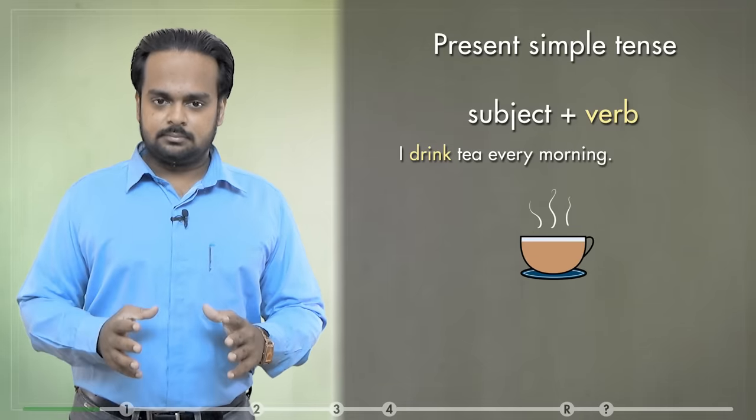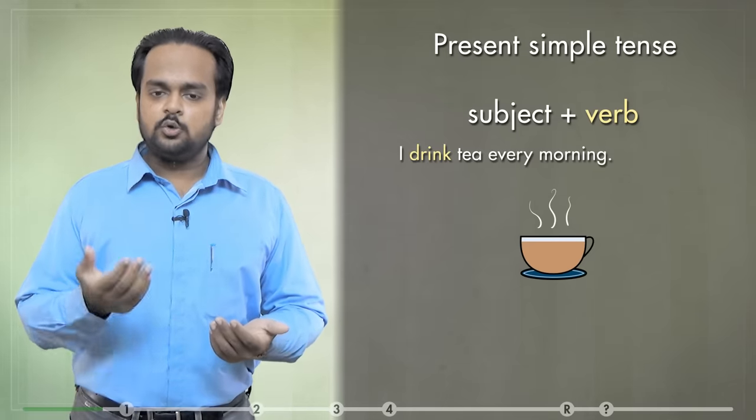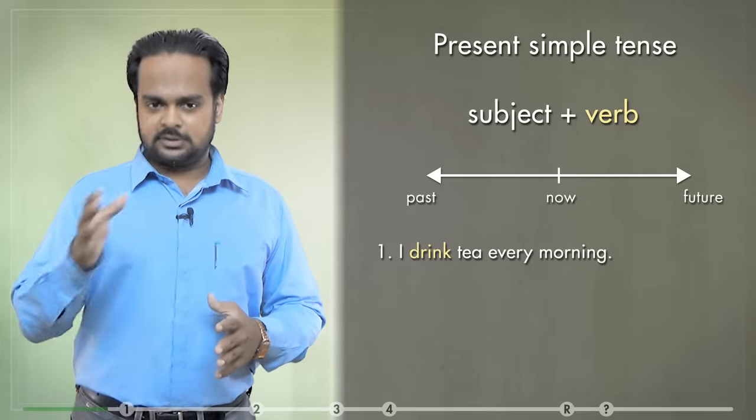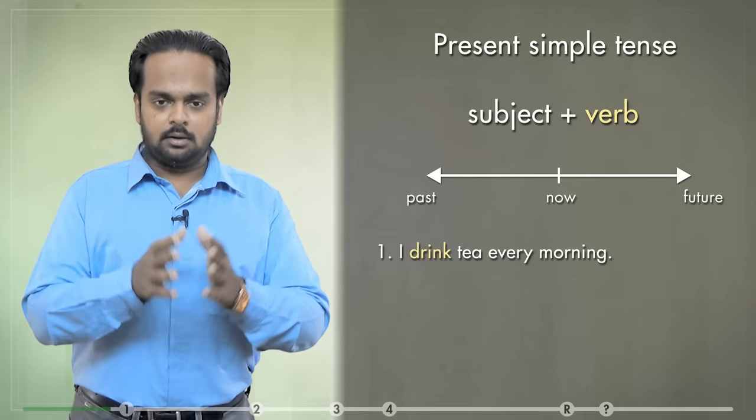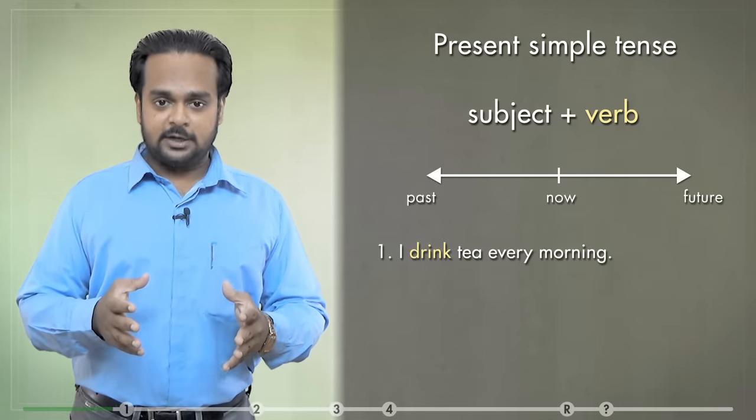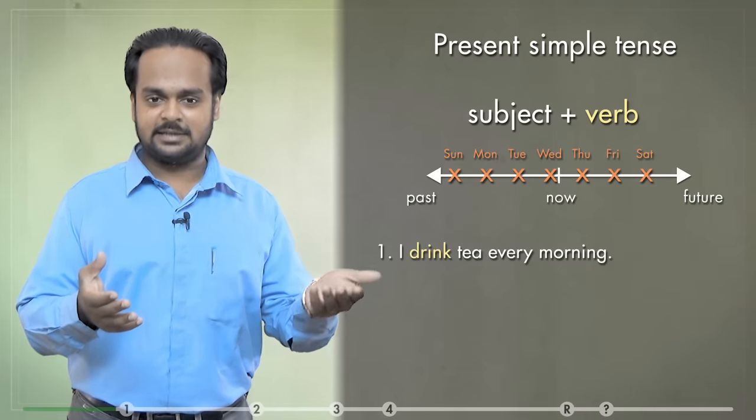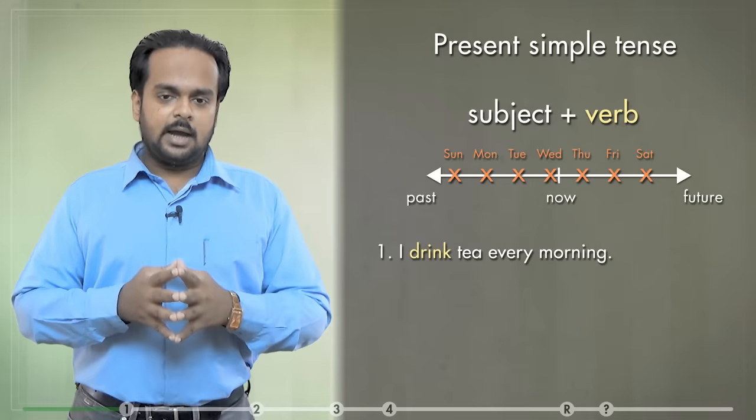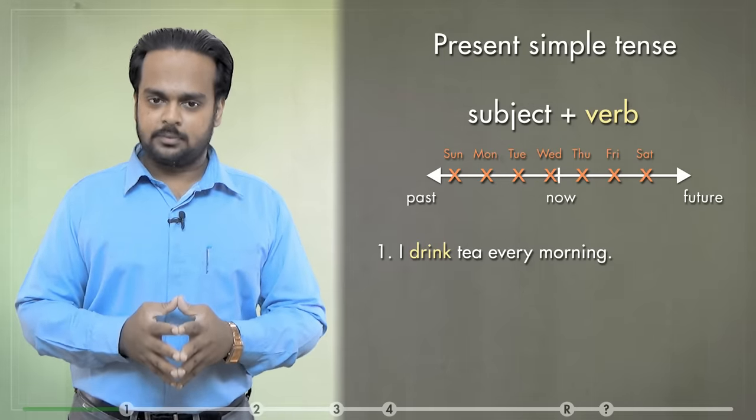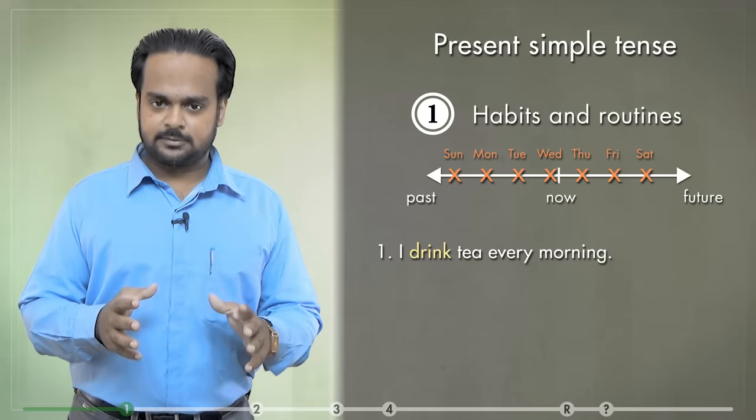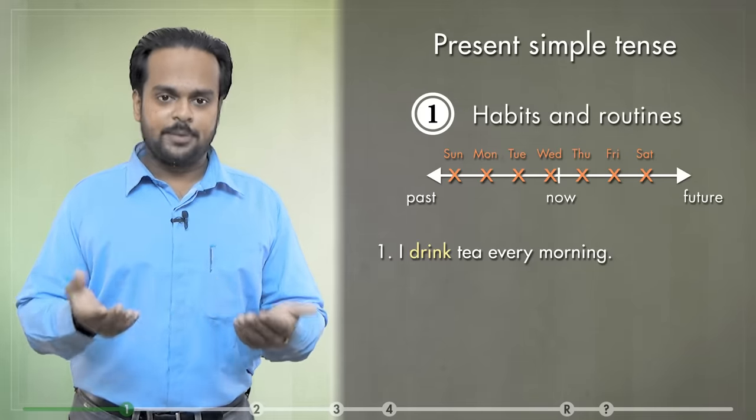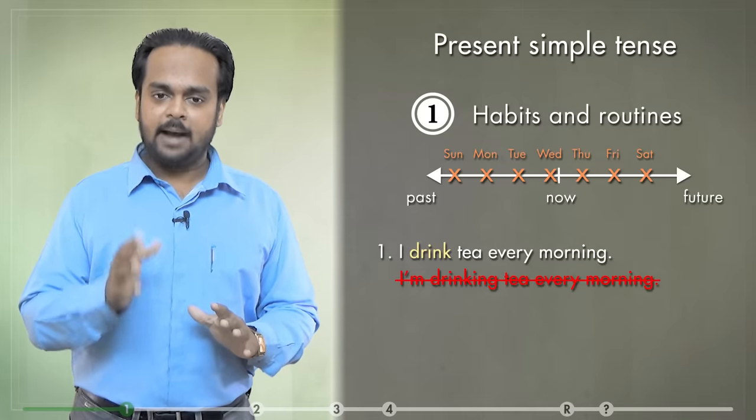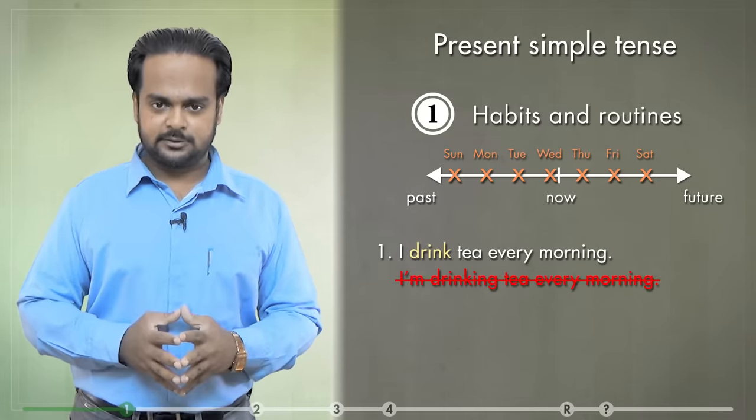Now, what does that sentence mean? Well, when I say I drink tea every morning, you know that I do the action regularly. Now, you see a timeline on the screen. Let's say that this side is the past, over on that side is the future and in the middle is right now. So you know that I drink tea on Sunday, Monday, Tuesday, Wednesday, Thursday, Friday, Saturday and so on. So you can see that it repeats. So this is a habit. And this sentence shows us the first use of the present simple tense. That is to talk about habits and routines. Things that we do regularly or repeatedly.